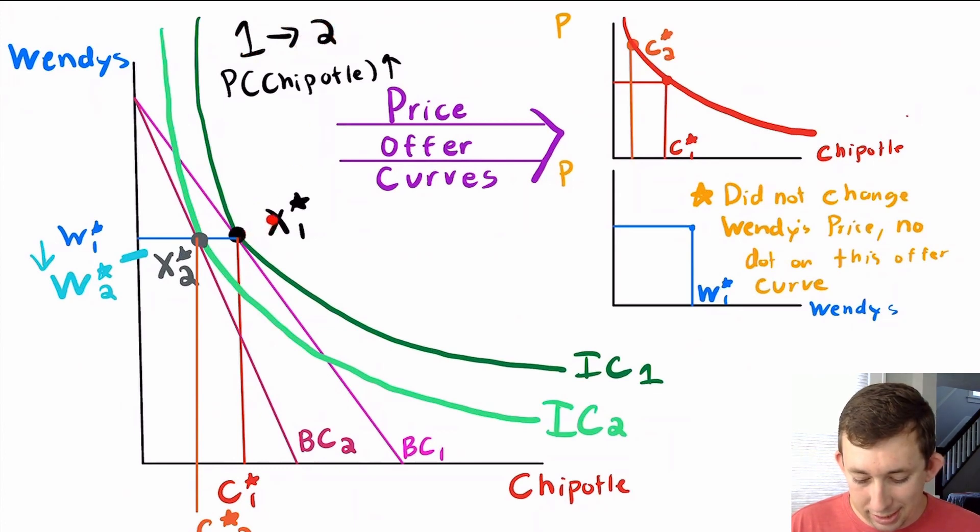If we're looking at this, we see x*1, which is the initial preferred bundle of Wendy's and Chipotle.